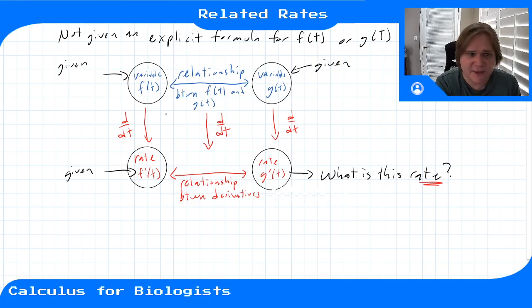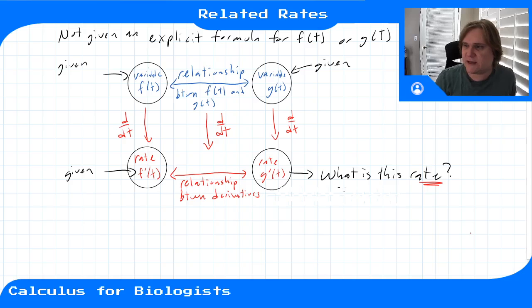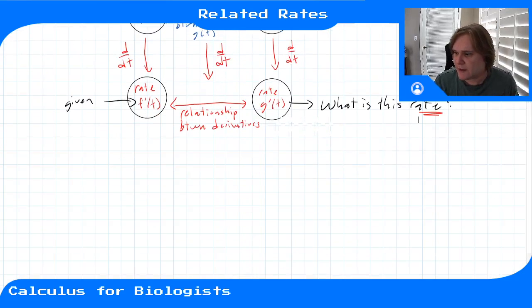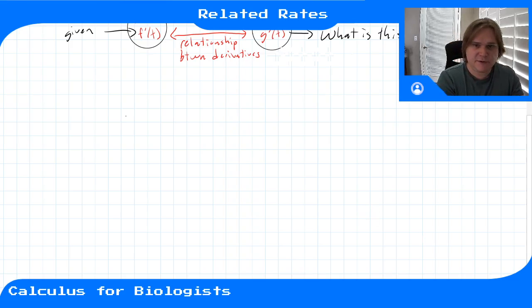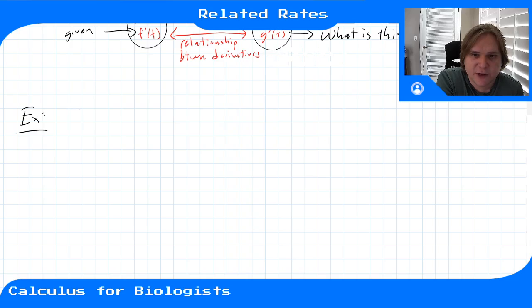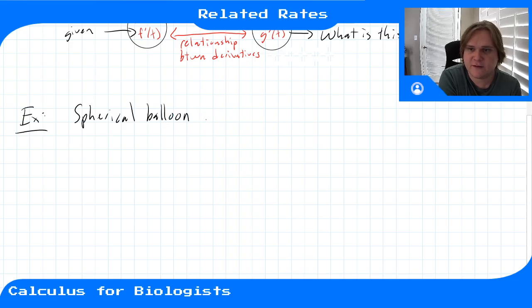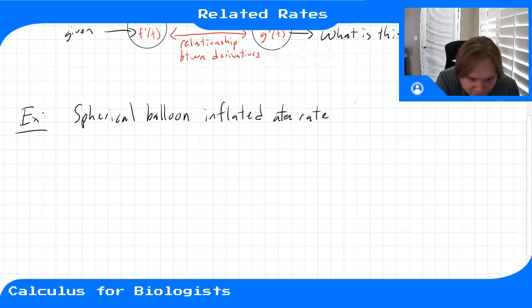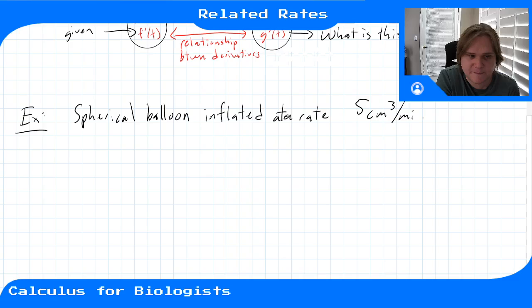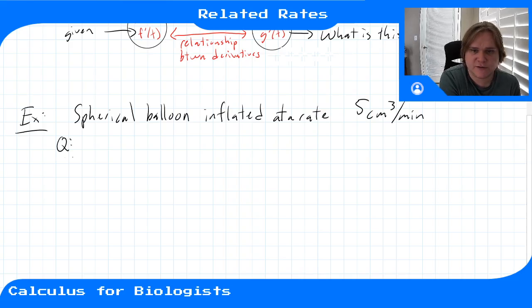That relationship between the derivatives is what you can use to compute the rate you're looking for. This is the general framework for related rates problems — in the abstract it may not be so clear, but we'll do an example. A typical example comes from problems with nice geometrical intuition. Here we're going to have a spherical balloon being inflated at a rate of 5 centimeters cubed per minute.